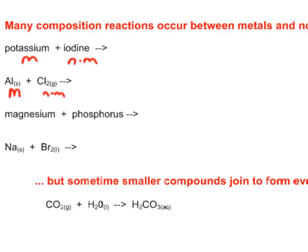Magnesium and phosphorus. Of course magnesium is the metal. Phosphorus comes from the other side of the periodic table, the right hand side. It's a non-metal. Sodium and bromine. Sodium of course is the metal, comes from the left hand side. Bromine is the non-metal, comes from the right hand side.